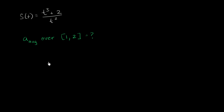Assuming you've given a go at it, the first thing you might have realized is we're trying to take the average value of a function that we don't know explicitly yet. We know the position function, but not the acceleration function. Luckily, we know that the acceleration function is the derivative with respect to time of the velocity function, which is the derivative with respect to time of the position function. So the acceleration function is the second derivative of this, and then we have to find its average value over this interval.